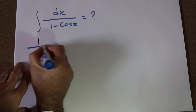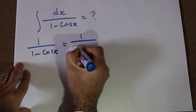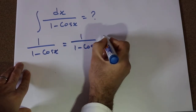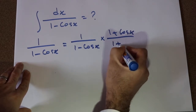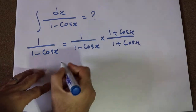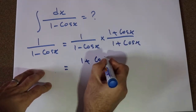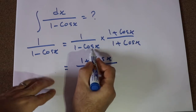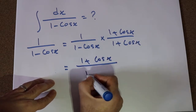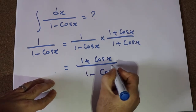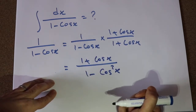So here, 1 divided by 1 minus cosine x, I can write it as 1 divided by 1 minus cosine x times 1 plus cosine x divided by 1 plus cosine x. This gives 1 times 1 plus cosine x, which is 1 plus cosine x, divided by 1 minus cosine x times 1 plus cosine x, equal to 1 plus cosine x divided by 1 minus cosine squared x. It's like a minus b times a plus b equals a squared minus b squared.